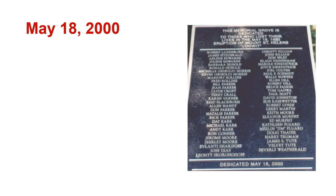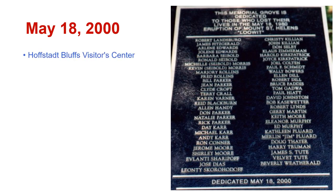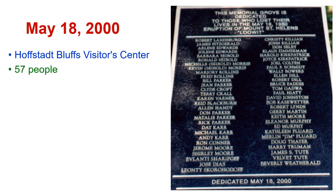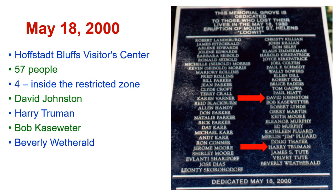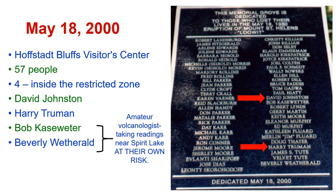On May 18, 2000, a memorial plaque was dedicated at the Hofstead Bluffs Visitors Center with the names of the 57 people who perished when the explosion happened. Four were inside the restricted zone: one was David Johnston — there's his name right there. Another was Harry Truman, the man who refused to leave. The other two inside the restricted zone were Bob Casewetter and Beverly Wetherald — they were amateur volcanologists taking readings near Spirit Lake and were there at their own risk.